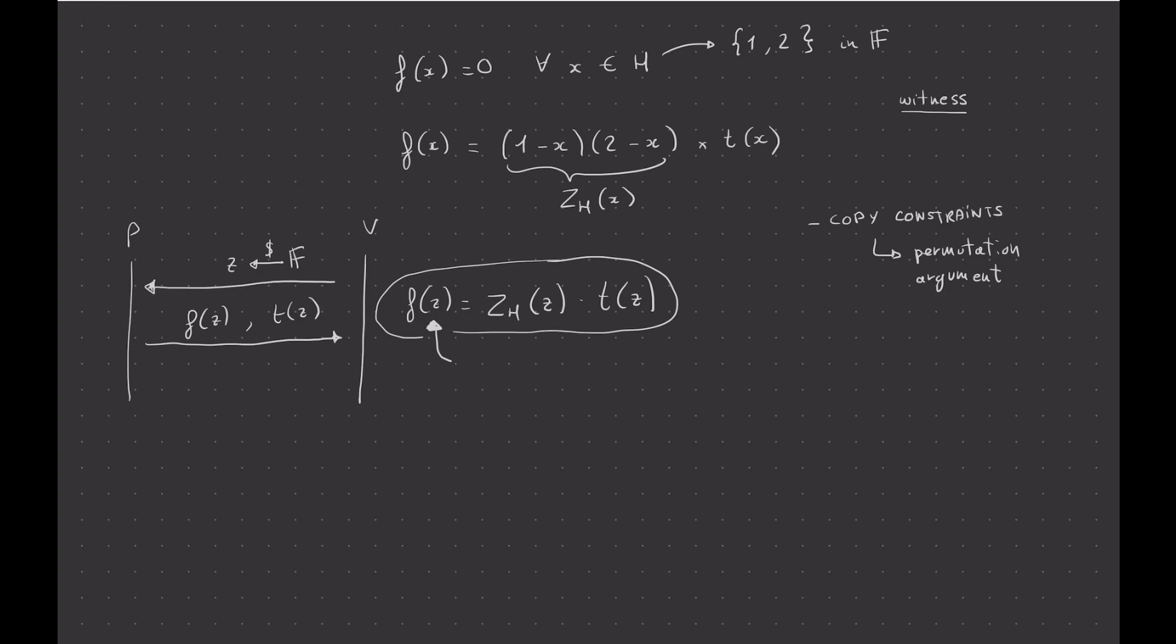So I said that the prover and the verifier need to form this f polynomial together so that the verifier can enforce the constraints of that circuit. We can call that the circuit polynomial.